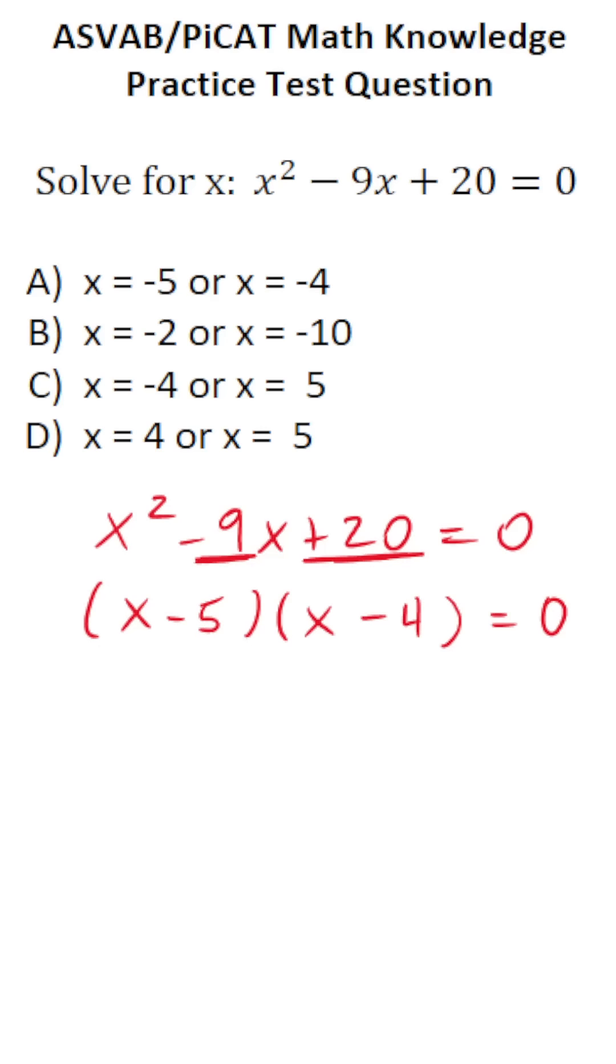Negative 5 times negative 4 is positive 20. Again, a negative times a negative is a positive. Negative 5 plus negative 4 is negative 9.